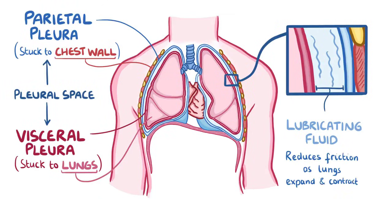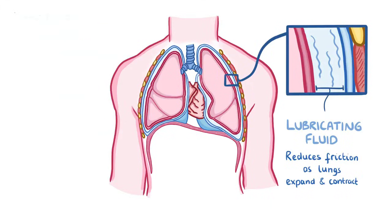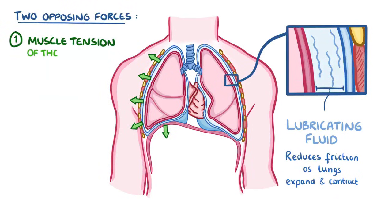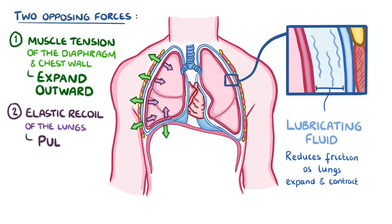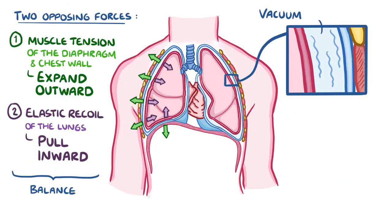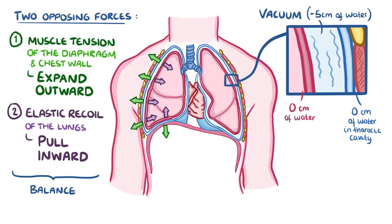Pressure within the pleural space is established by two main opposing forces. One is the muscle tension of the diaphragm and chest wall, which contract and expand the thoracic cavity outwards. The other is the elastic recoil of the lungs, which try to pull the lungs inward. The two pull on each other, creating a slight vacuum in the pleural space — resulting in a pressure of minus five centimeters of water, relative to zero centimeters of water in both the thoracic cavity and the lungs.